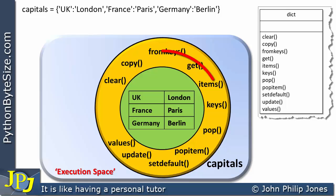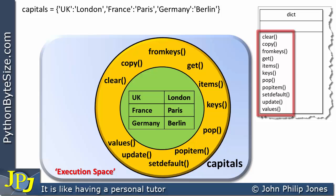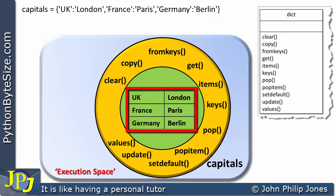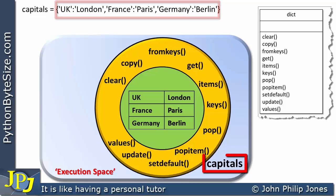If you look at this object, you can see in this outer area we have all of the methods that were declared in the dictionary class, and here in the center we have the three items that were declared in the program statement. Here we can see the name of the object, and that particular name appears here in the code.